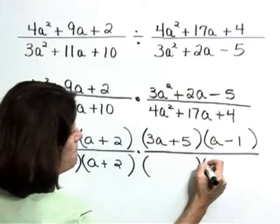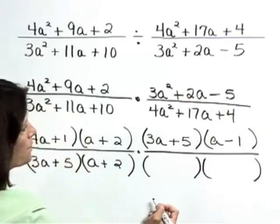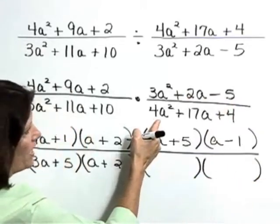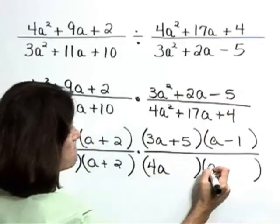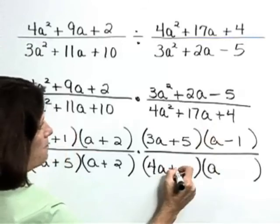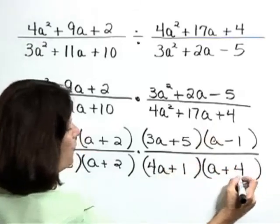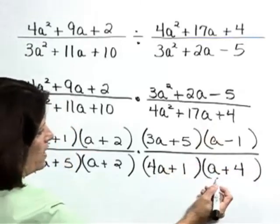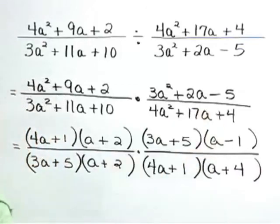To the denominator. Factors of 4a squared are 4a and a. Factors of positive 4 are a plus 1 and a plus 4, and let's check. 1a plus 16a gives that 17a.